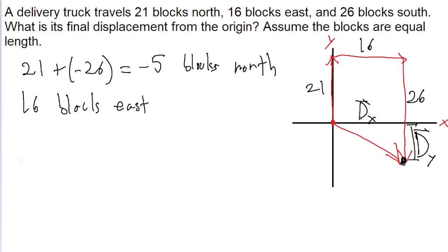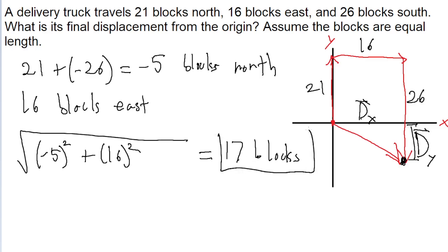So to find the magnitude of the displacement, we just have to take the square root of the sum of the squares of the components. So the square root of negative 5 squared plus 16 squared. And this gives us an answer of about 17 blocks. This is the magnitude of the displacement.